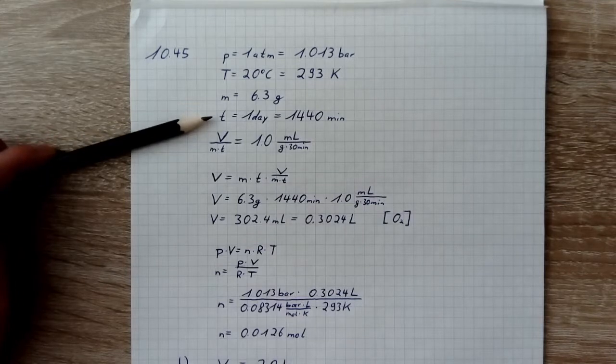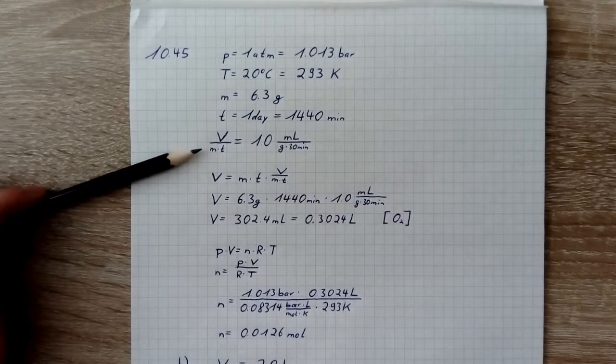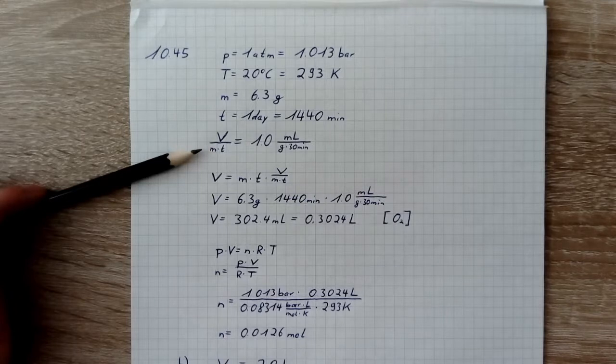We have a time of one day which is 1440 minutes. And we have a volume per mass and time which is 1.0 ml per gram and 30 minutes.